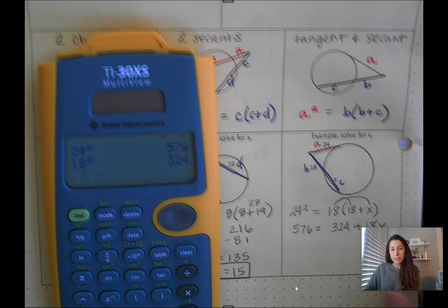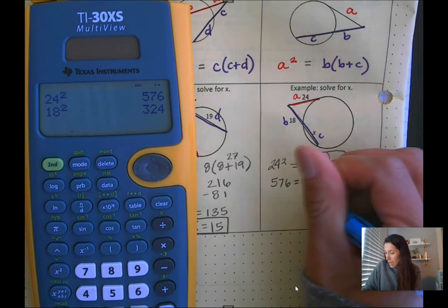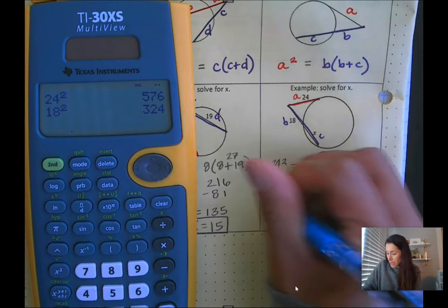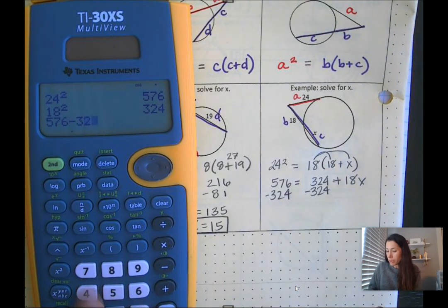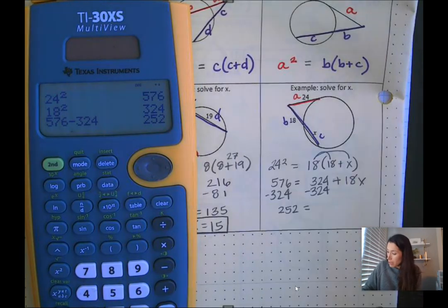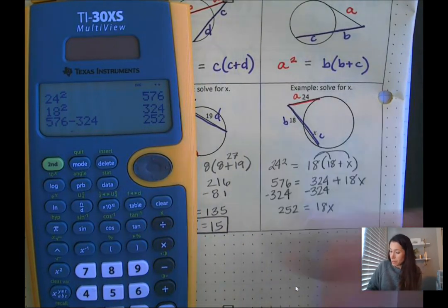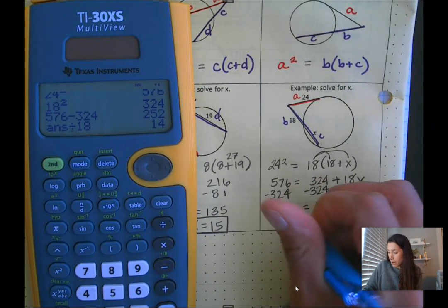Now we're just solving for X. Let's subtract 324 on both sides. So we have 576 and we're subtracting 324. That gives us 252 is equal to 18X. And then we just need to divide by 18 on both sides. So X is going to be 14 in this diagram.